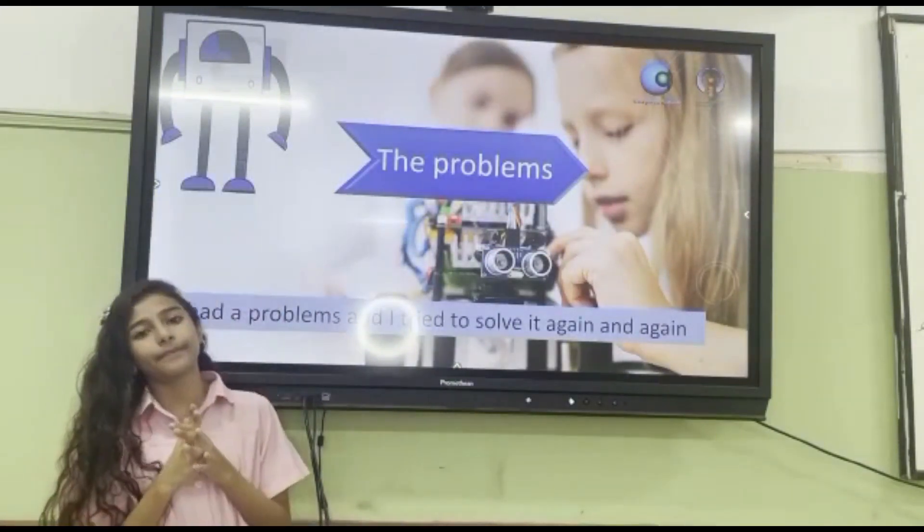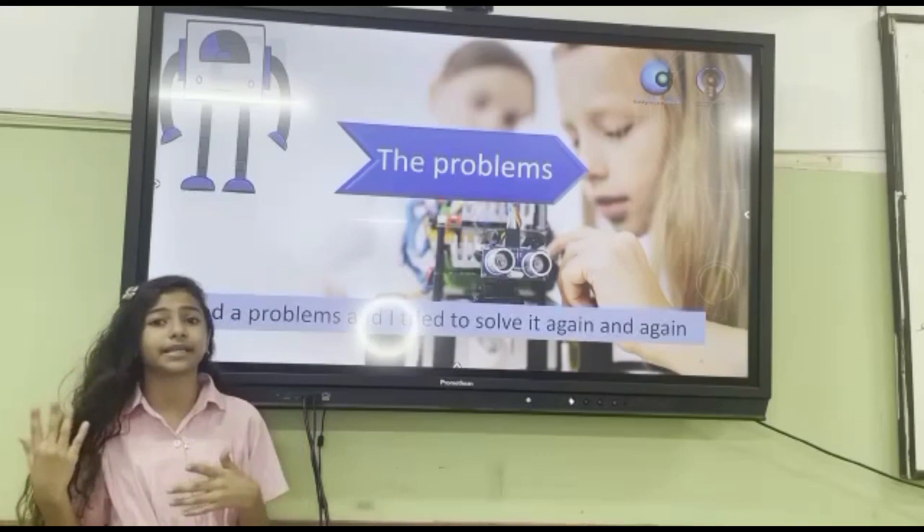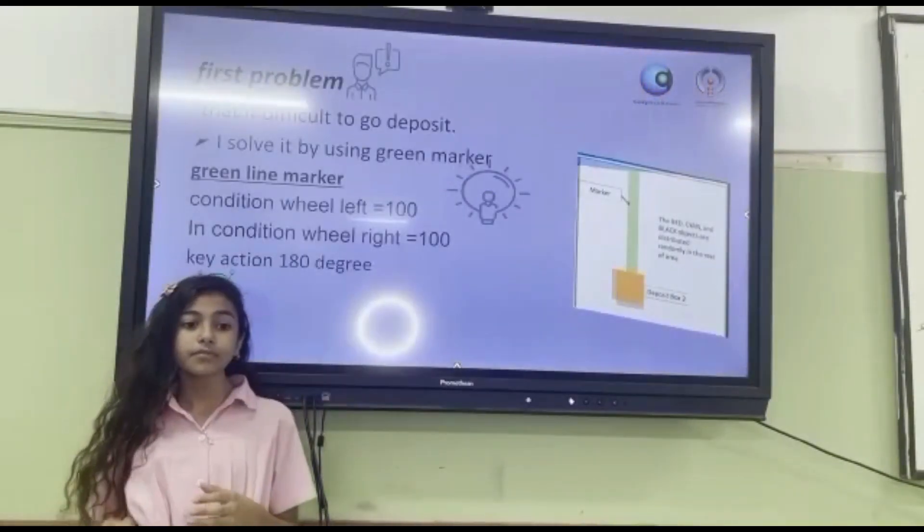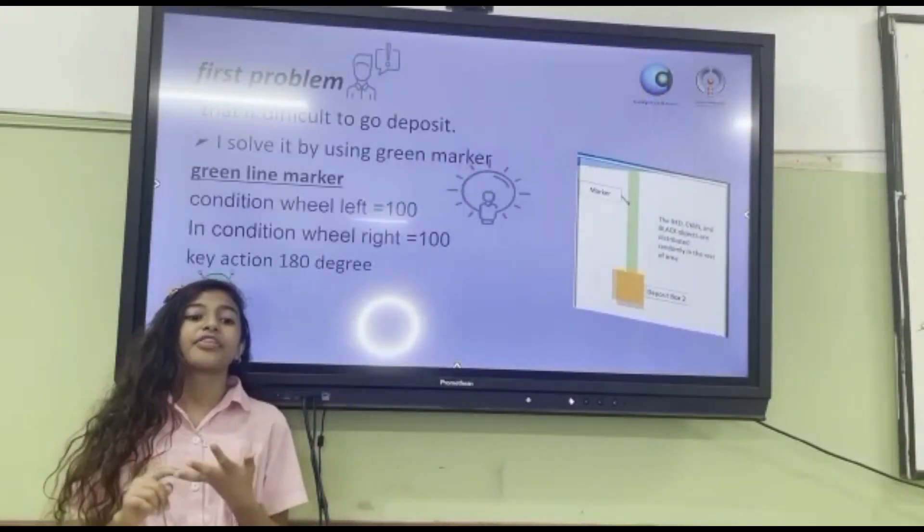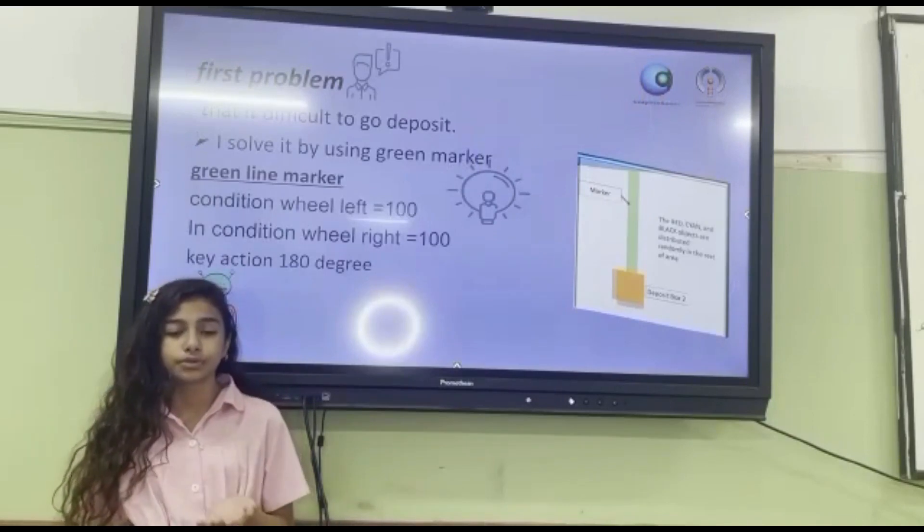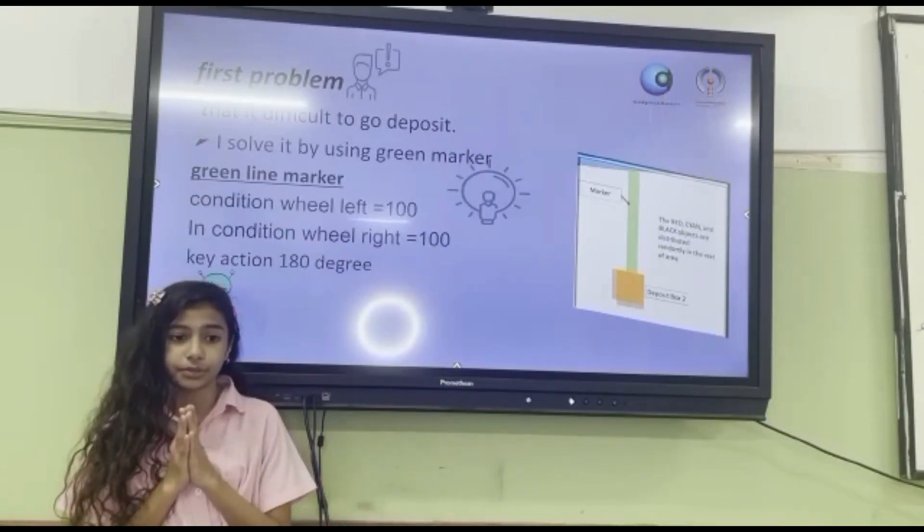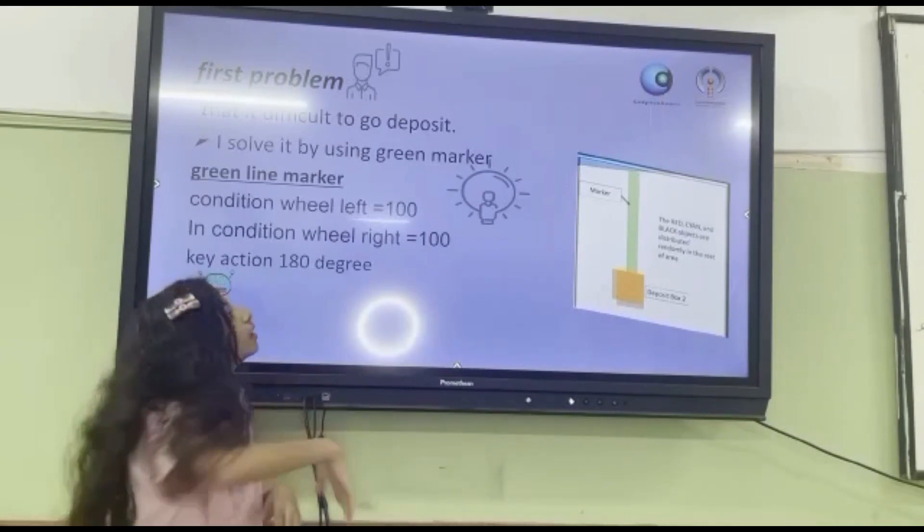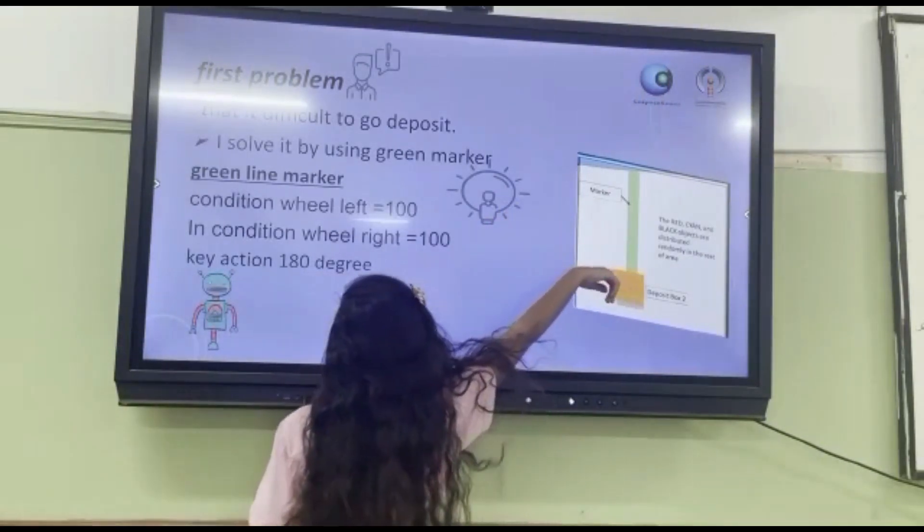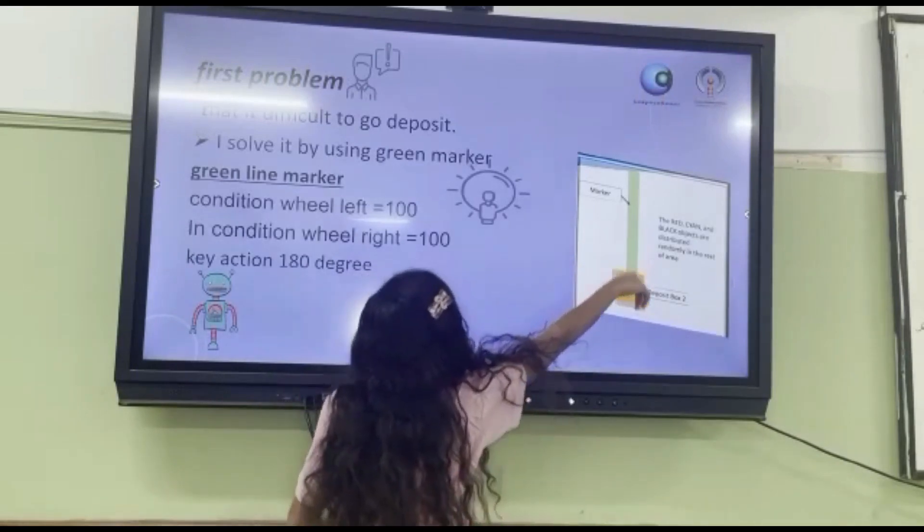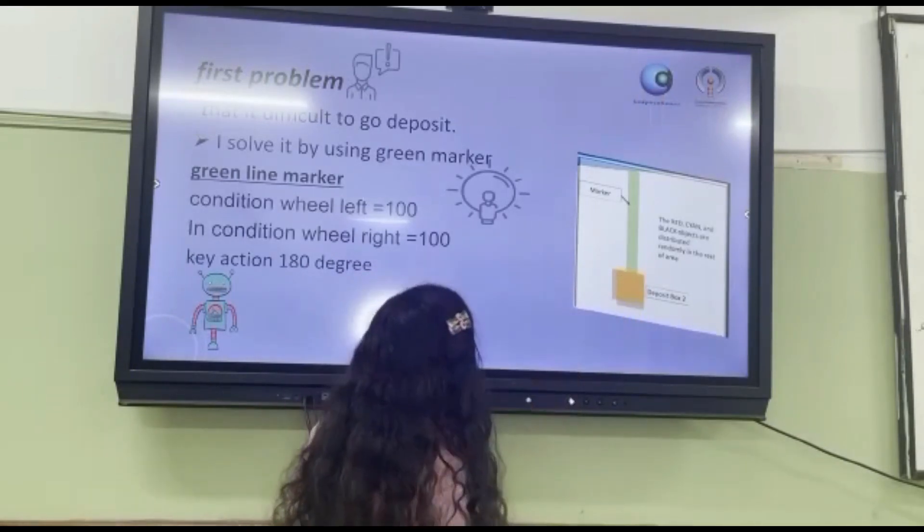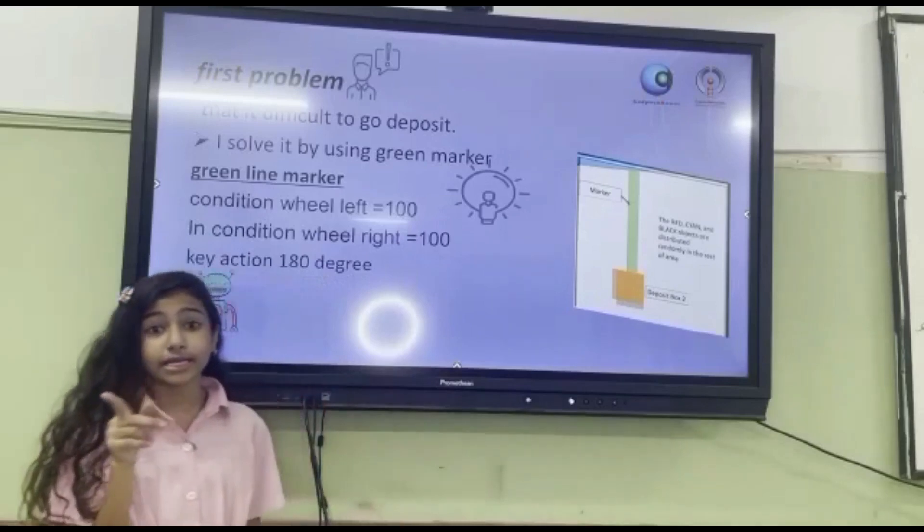I had a problem and I tried to solve it again and again. First problem: it is difficult to go to bottom. I solved it by using the green marker line, condition wheel left equals 100, condition wheel right equals 100, and key action moves 180 degrees.